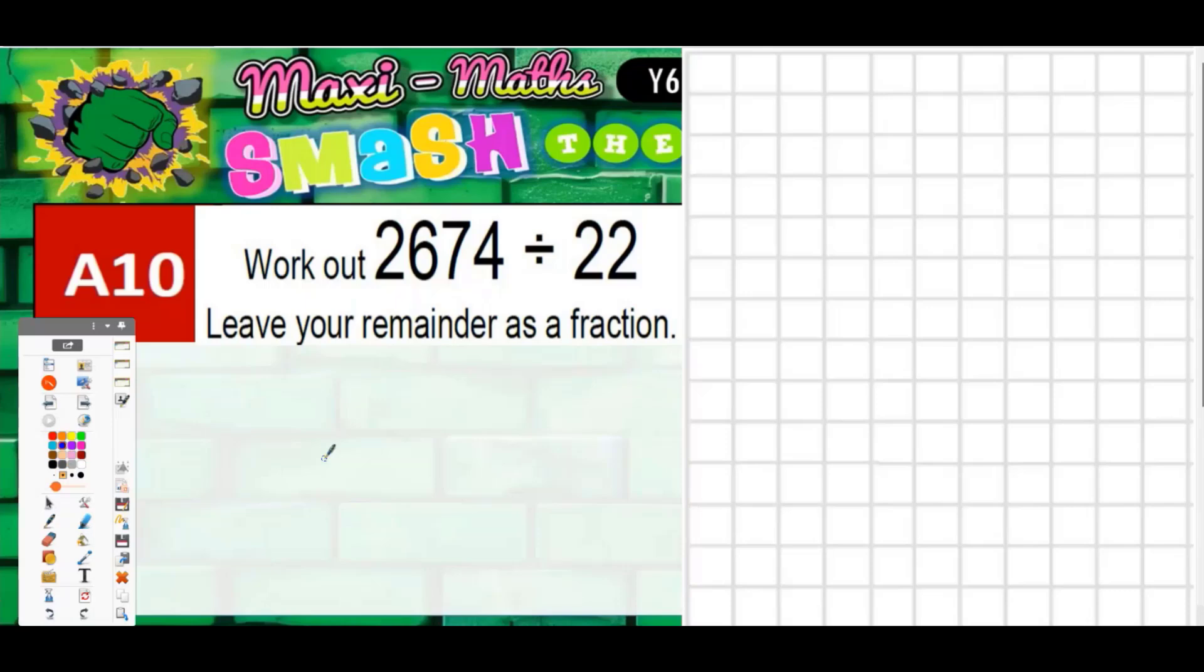Question 10: work out 2674 divided by 22. Now there are a couple of ways you could do this - you could try it with a short bus stop method or you could try the longer chunky method. Obviously we try to use the most efficient method that we can, that will take us the least time possible. Now it very much depends on the numbers.